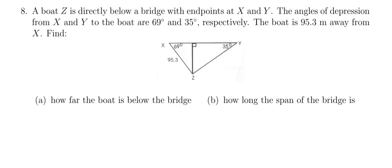So this question says a boat Z is directly below a bridge with endpoints X and Y. The angles of depression from X and Y to the boat are 69 degrees and 35 degrees respectively. The boat is 95.3 meters away from X.